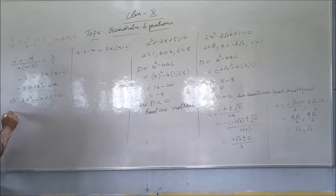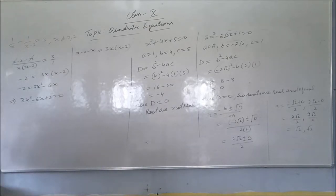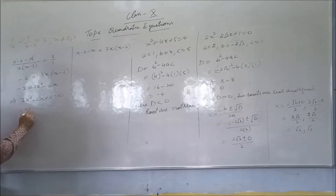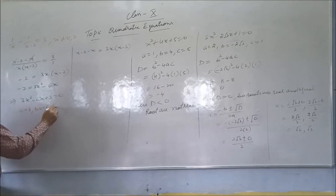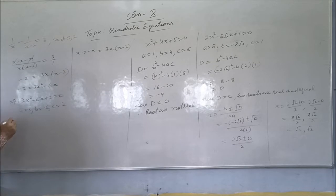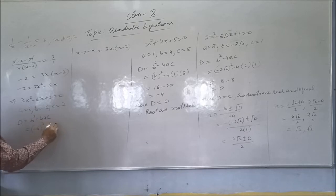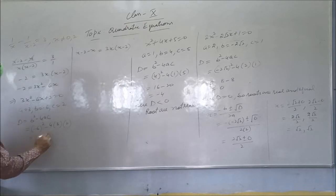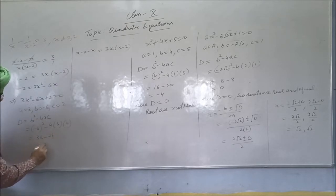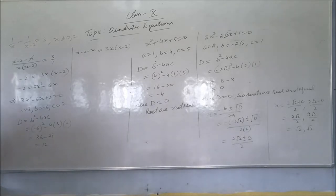This becomes x minus 2 minus x equals 3x(x minus 2), which simplifies. Now you can solve this equation using many methods — if you are comfortable with splitting the middle term you can use that, or you can use the quadratic formula. Here I am using the quadratic formula. First we calculate the discriminant: a is 3, b is minus 6, c is 2. D equals (minus 6) squared minus 4 into 3 into 2 equals 36 minus 24 equals 12, which is greater than 0, so roots exist.